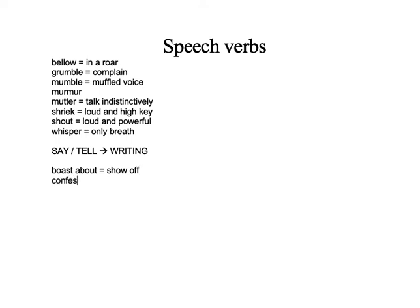The next one is confess. You know the meaning of confess. The preposition that goes with confess is 'to' — you confess to doing something, to having done something. Insist is another verb whose meaning is very easy. The correct preposition is 'on' — you insist on something.